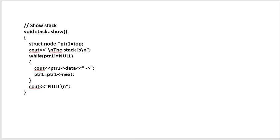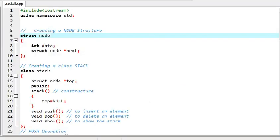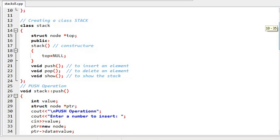Next is the show function, and then the main function. The main function is written as a menu-driven program using a switch statement inside a while(1) loop — it is always true. Case 4 is exit: it executes return 0, which exits the function. This is the complete program for stack using linked list.